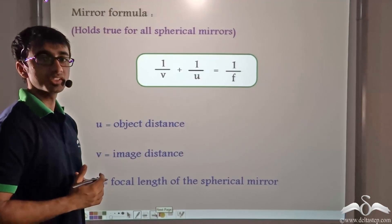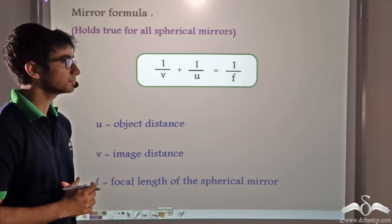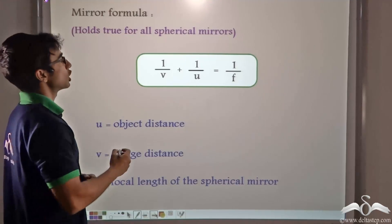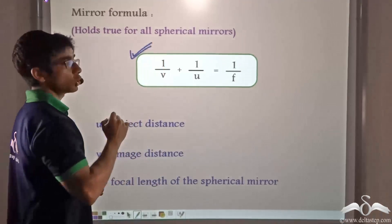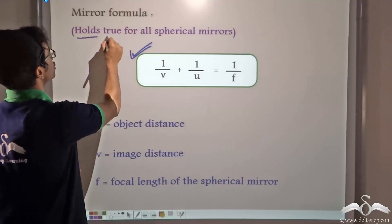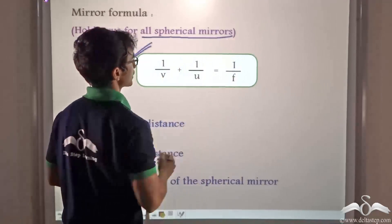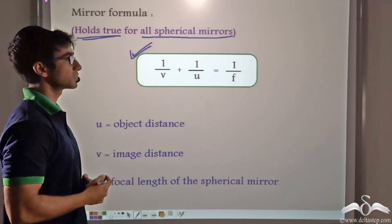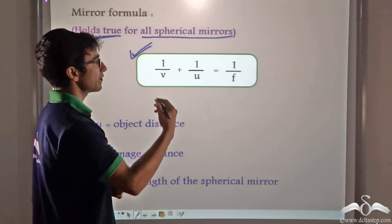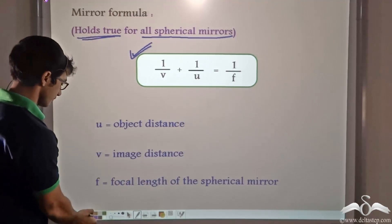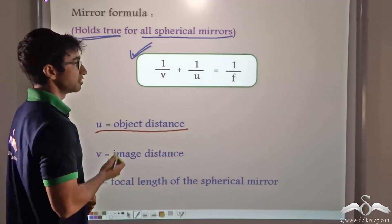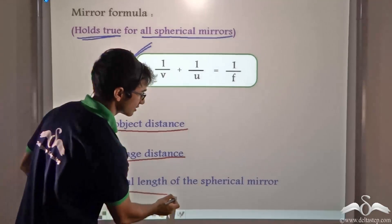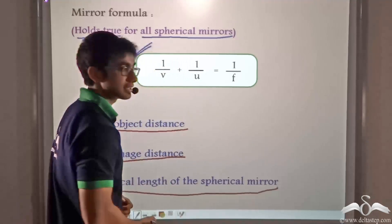So with all this information, how can we find out the focal length of a mirror? The focal length of a mirror is found out with the help of the mirror formula. Note that this mirror formula holds true for all spherical mirrors. The mirror formula states that 1/V + 1/U = 1/F, where U is the object distance, V is the image distance, and F is the focal length of the spherical mirror.